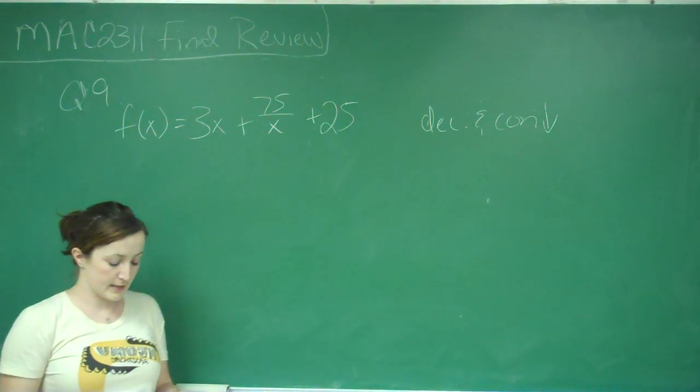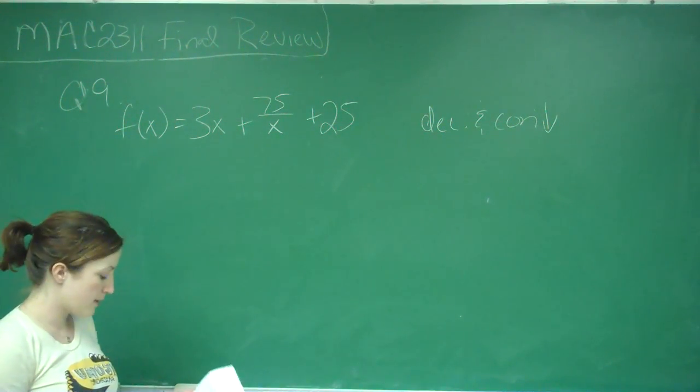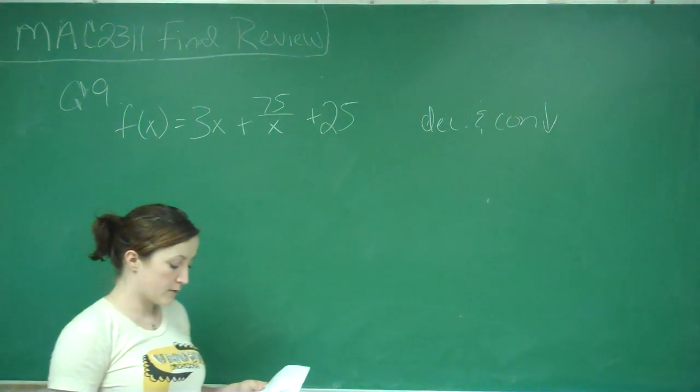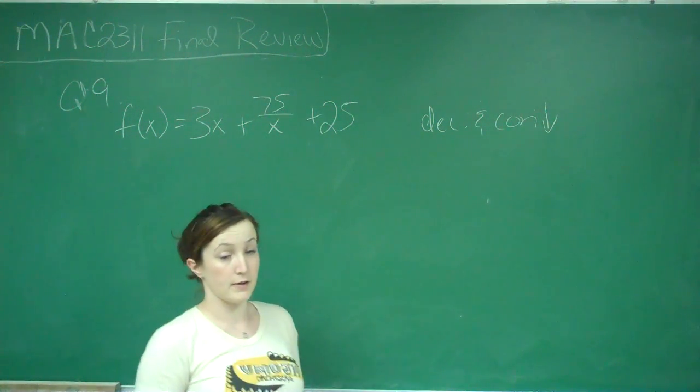So this is question number 9, and it says that f of x equals 3x plus 75 over x plus 25. Find each interval on which the graph of f is both decreasing and concave down.